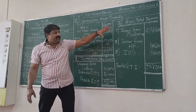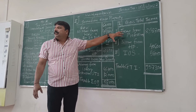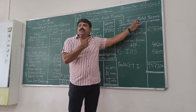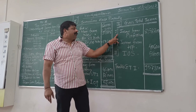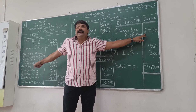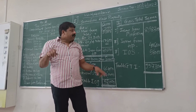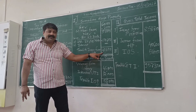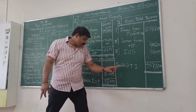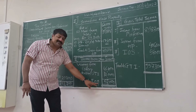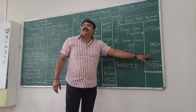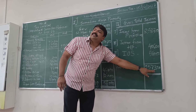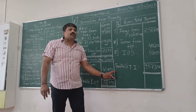Now we will take a gross statement of gross total income. Statement one, two, and three — we will add them together. Statement number four: gross total income. Income from profession: 8,58,700. Income from house property: 40,600. Taxable income from other sources: 38,000. So total of these three incomes is 9,57,300 — this is taxable gross total income.